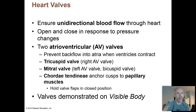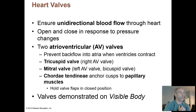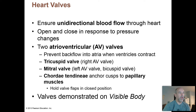Cusps are another name for the valve flaps — they're kind of triangular in shape. You have three on the right side of the heart and two on the left, which is where the names tricuspid and bicuspid come from. There are also connective tissue cords called the chordae tendineae that pull on those valve flaps when the ventricles contract to help close them.